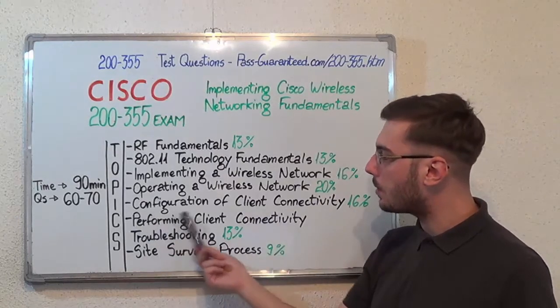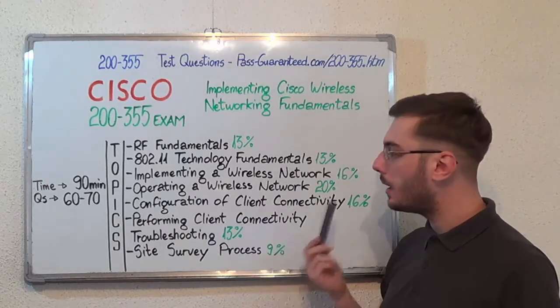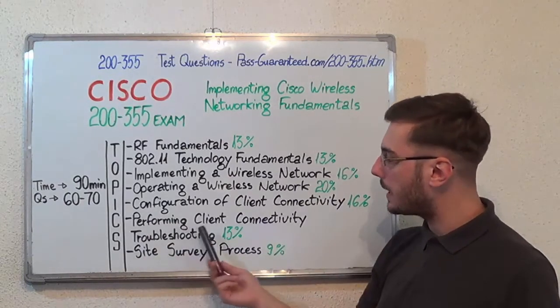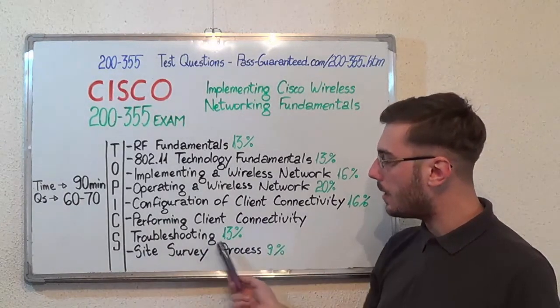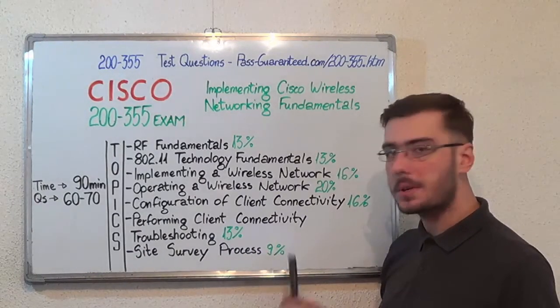After that, Configuration of Client Connectivity with 16%. Next, Performing Client Connectivity troubleshooting with 13%. And the last one, Site Survey Process with 9%.